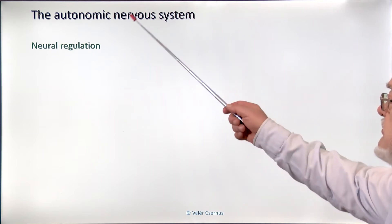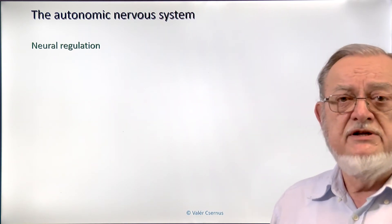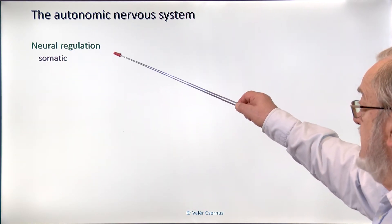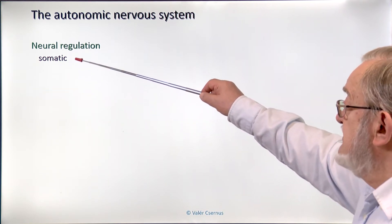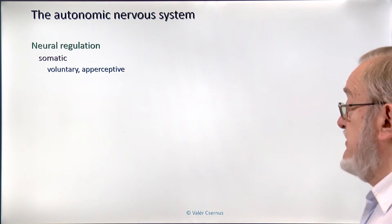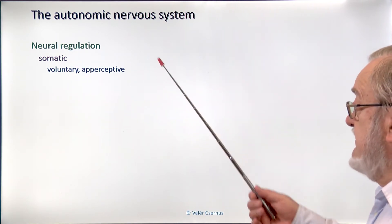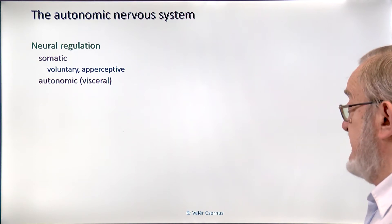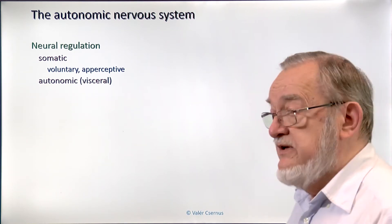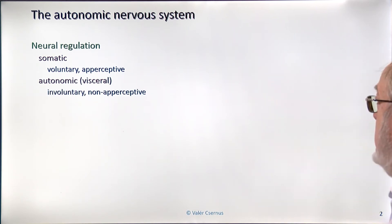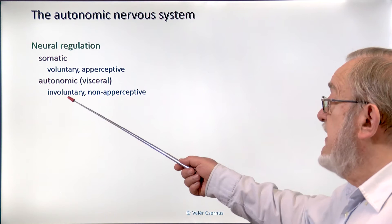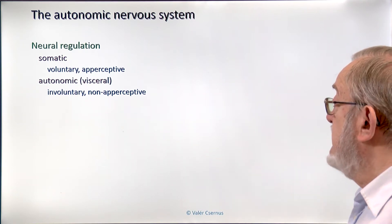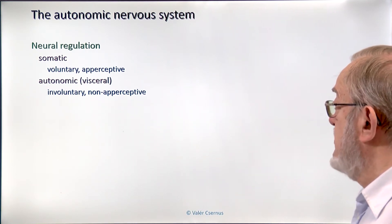Today I start describing the autonomic nervous system. To put it into the picture, I'll repeat the general things on neural regulation. We have two levels of neural regulation: the somatic and the autonomic. The somatic is voluntary — we do what we want — and aperceptive, we get to know what we feel. We have in parallel the autonomic or visceral nervous system, which is a kind of service function working for maintenance. We cannot modify it; we cannot modify heart rhythm or body temperature. We are not aware of the information based on which this system is working.